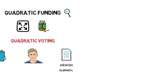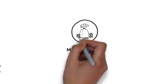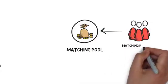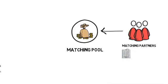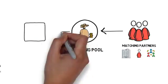At the core of quadratic funding is its matching pool. A matching pool is a pool of money that is provided by the matching partners. Matching partners are companies, individuals or even protocols supporting public goods projects.